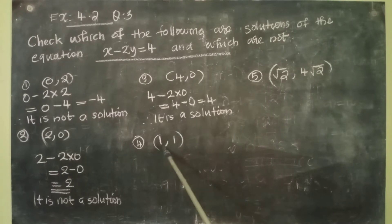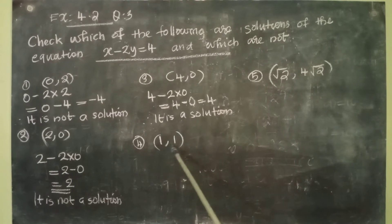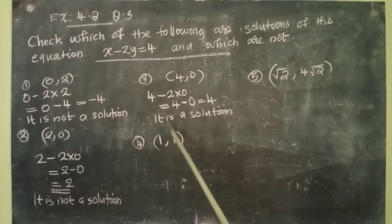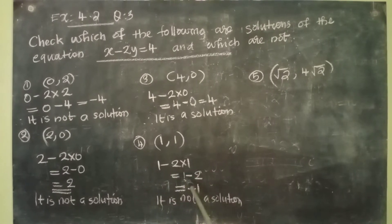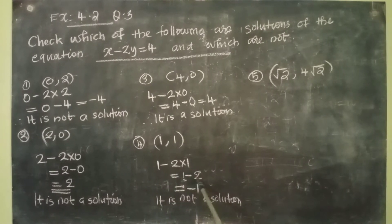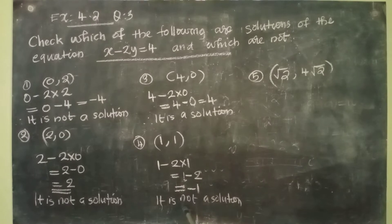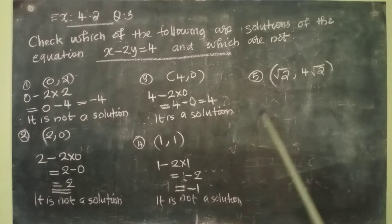The next pair is (1, 1). x is 1 and y is also 1. Let us substitute there. We get 1 minus 2 into 1, that is equal to 1 minus 2, equal to minus 1. So it is not a solution.